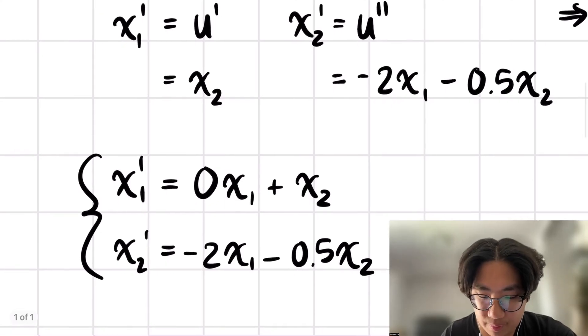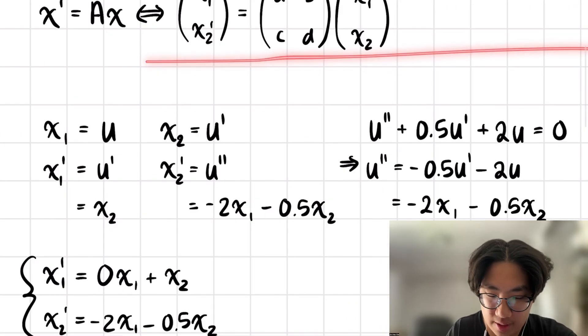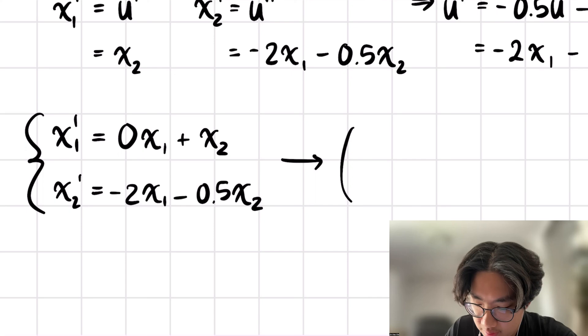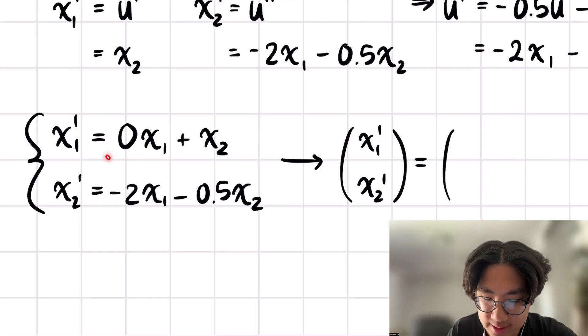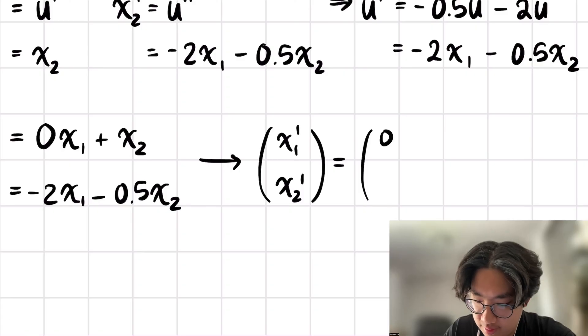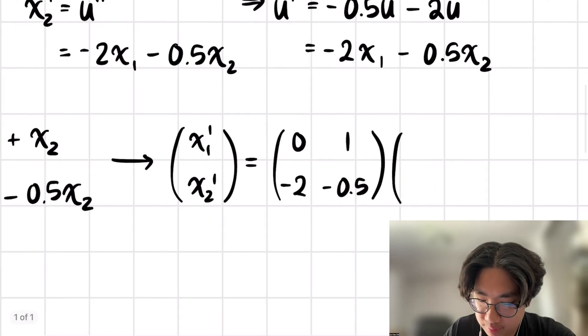We remember what we learned in linear algebra, we are able to convert this into a system. So we have x1 prime, x2 prime, this is equal to, and then we can imagine these coefficients as the entries of our matrix. So we have 0, 1, then negative 2, and negative 0.5. And then this is multiplied by x1, x2.